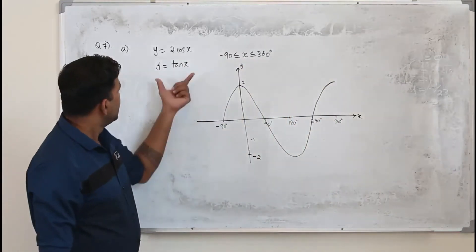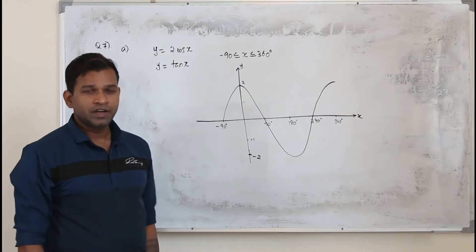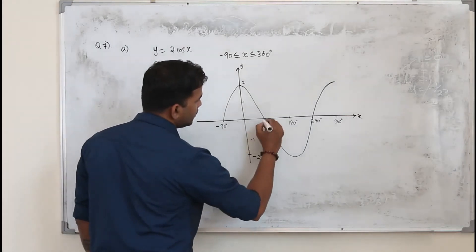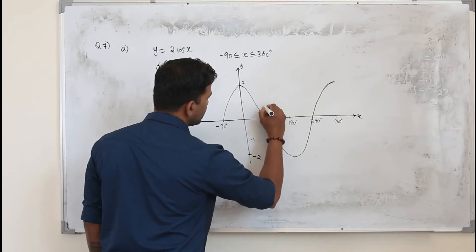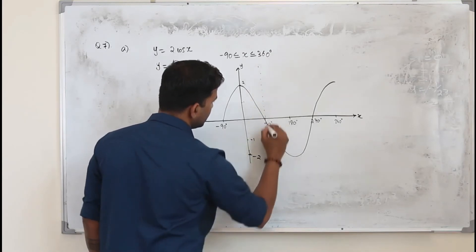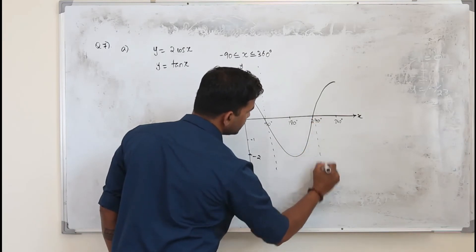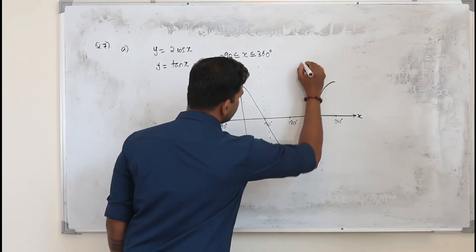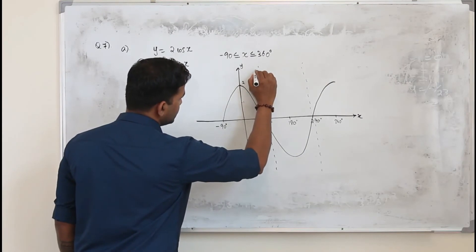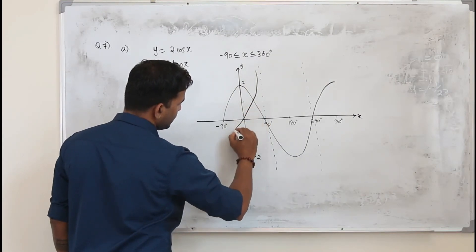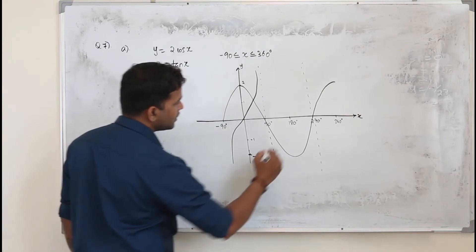Now to sketch the tangent graph, you have to draw an asymptote at 90 and another asymptote at 270. You also need to draw an asymptote at -90.